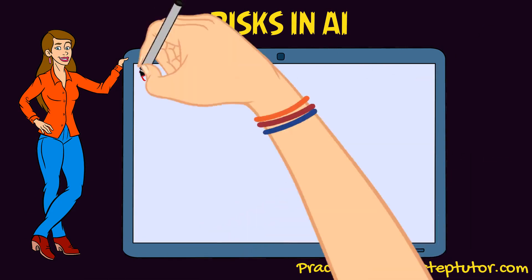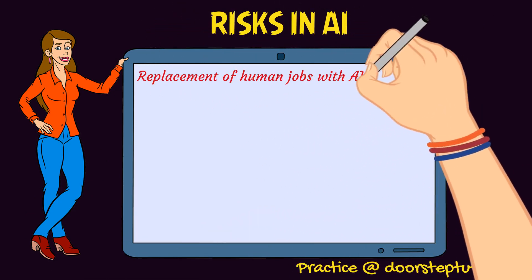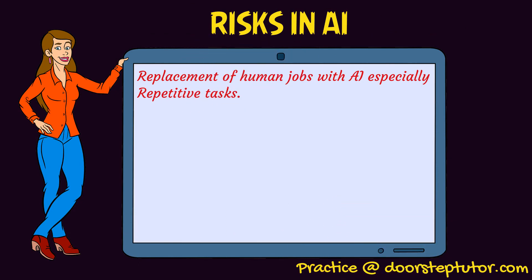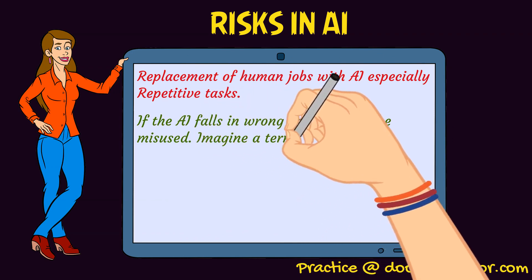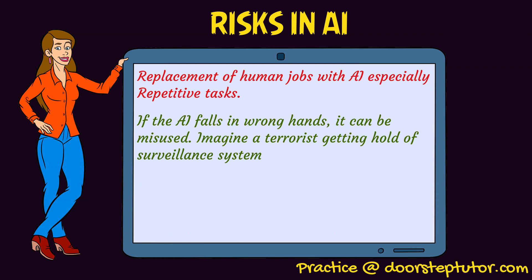Now what are the risks in AI? First is the replacement of human jobs, especially repetitive jobs where no thinking is required. Clerical jobs and similar roles are in danger of being eliminated. The biggest risk is that AI will replace humans in many jobs. How many jobs are eventually removed will depend on how far AI can deliver a personalized experience. Second, if AI falls in the wrong hands it can be seriously misused — for example, if terrorists get access to an AI-based surveillance system.